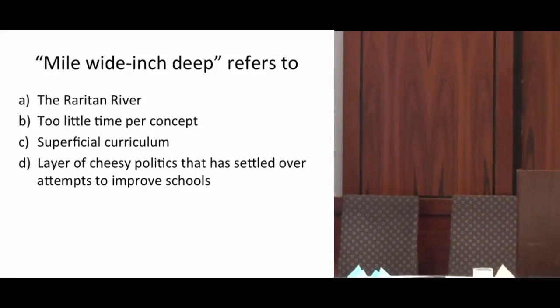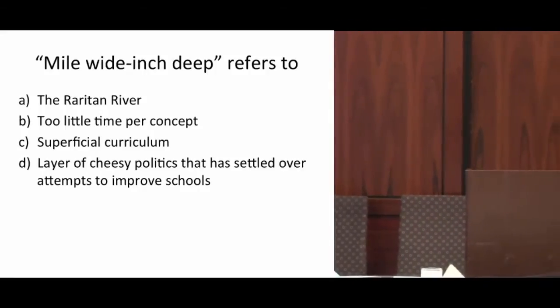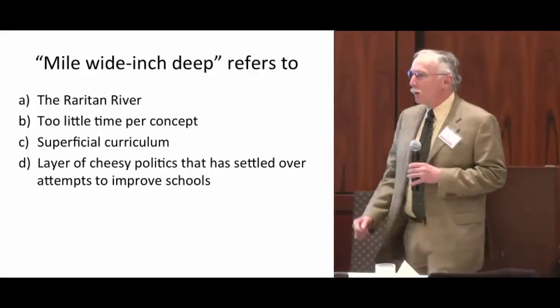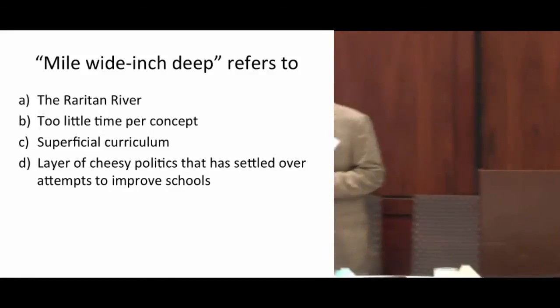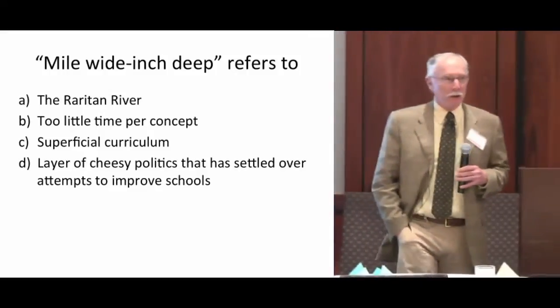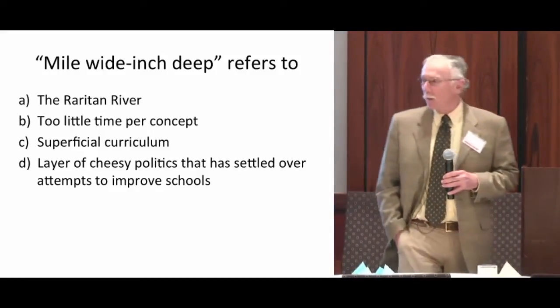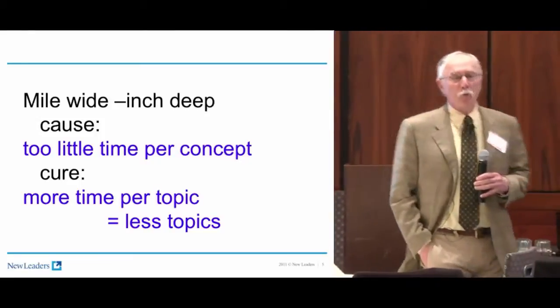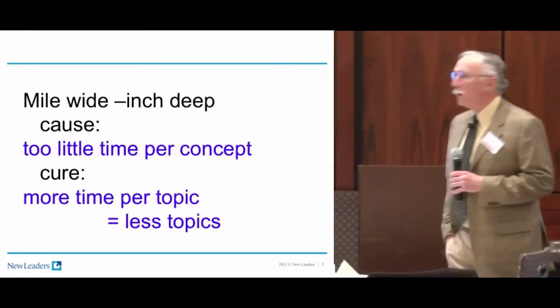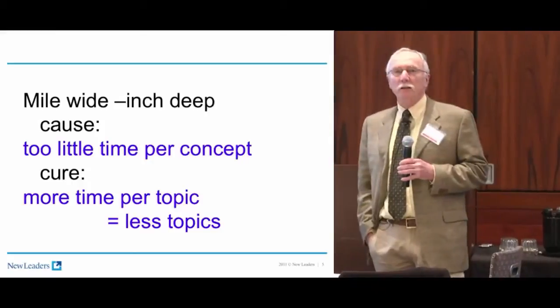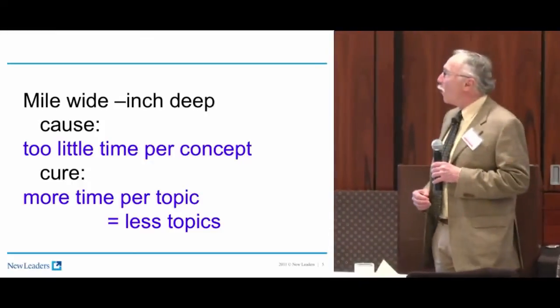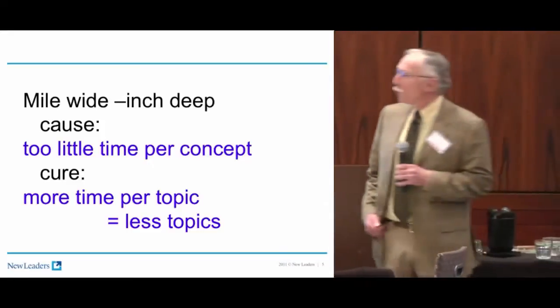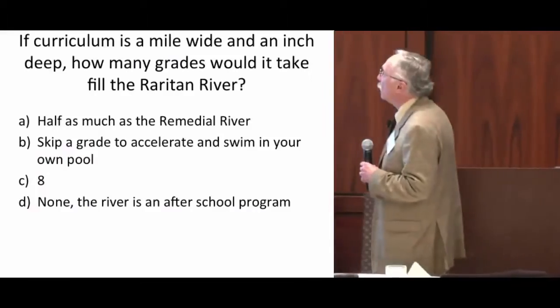Mile wide, inch deep refers to the Raritan River. Too little time per concept, superficial curriculum. It's a layer of cheesy politics that has settled over our attempts to make things better. But this mile wide, inch deep really is a big important part of the problem. It's important that we realize it's a statement about what's wrong with our curriculum, what we're teaching. The Common Core is really an attempt to make it better.